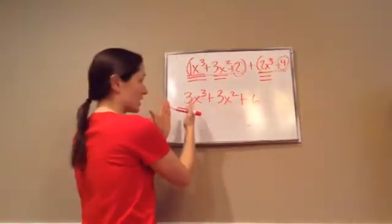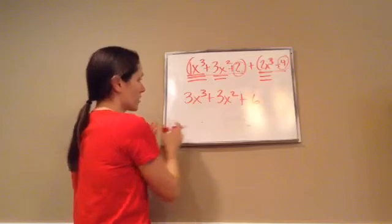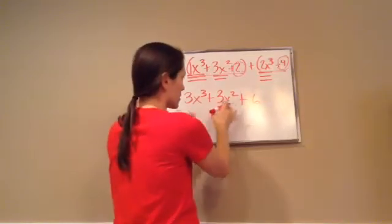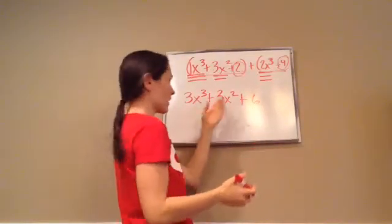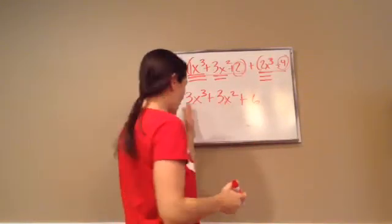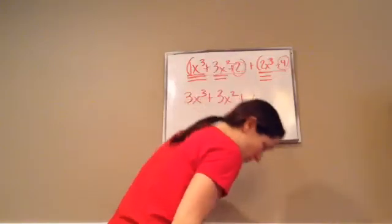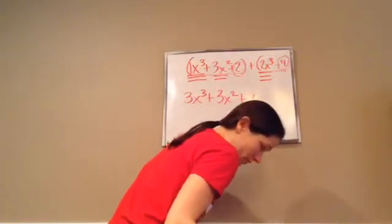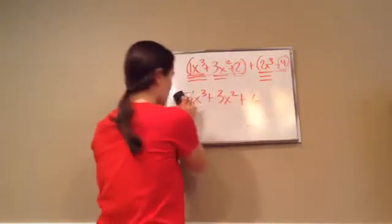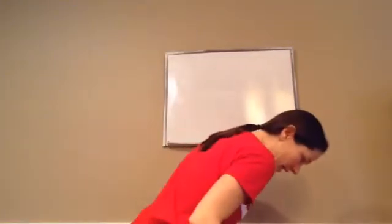And descending order is 3, 2, 1. We don't go six plus 3x squared plus 3x cubed — we write it in descending order. And that's pretty much how you do every one of them. So try this one on your own on your paper and let's see how you do with it.